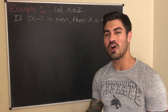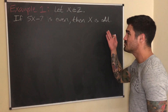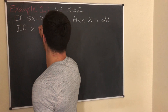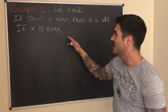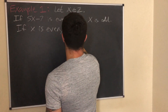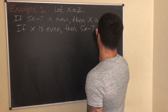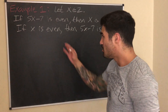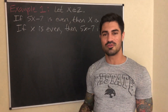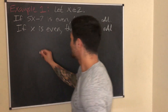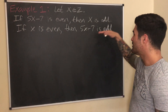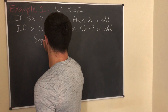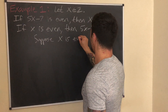Let's write out the contrapositive of this statement. We take the conclusion and negate it: the negation of 'x is odd' is 'x is even.' Then we take the premise and negate it. So the contrapositive is: if x is even, then 5x minus 7 is odd. Now what we get to assume is that x is even, so x equals 2k where k is some integer — which is much easier to work with than 5x minus 7 was.